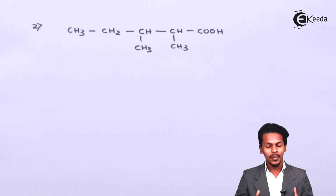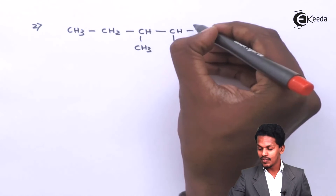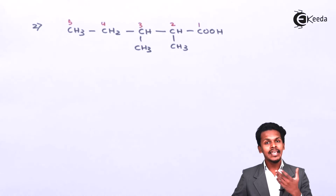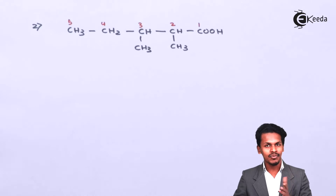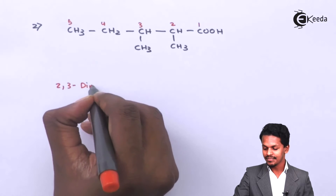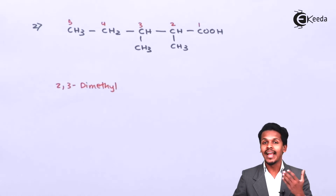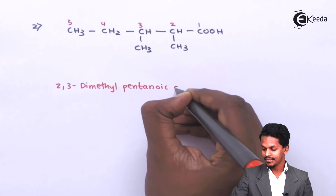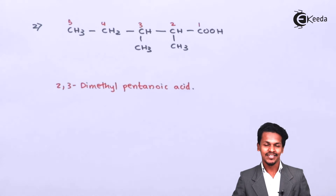For the second example, we identify the carboxyl group and assign it carbon number 1, followed by carbons 2, 3, 4, and 5. Methyl groups are attached at carbon 2 and carbon 3. With 5 carbons total, the parent is pentane, but since it's a carboxylic acid the suffix '-e' is replaced with '-oic acid,' giving the name 2,3-dimethylpentanoic acid.